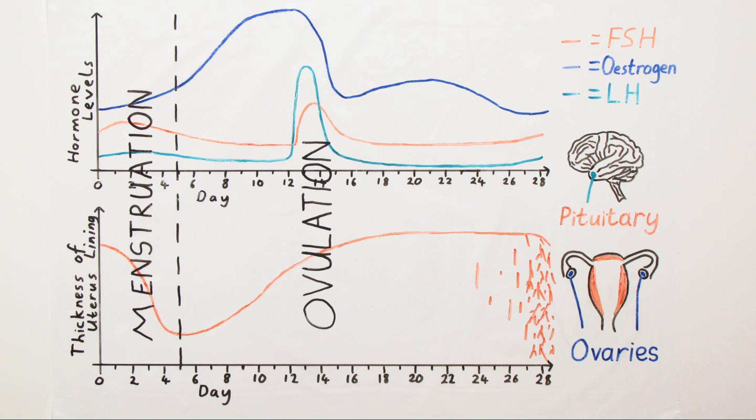The increasing estrogen levels cause the lining of the uterus to start to thicken and they also cause the levels of FSH to fall. Finally just before the middle of the menstrual cycle the estrogen levels get so high that they stimulate the pituitary gland again to start producing LH, luteinizing hormone, and that causes the egg which has matured to be released from the ovary.